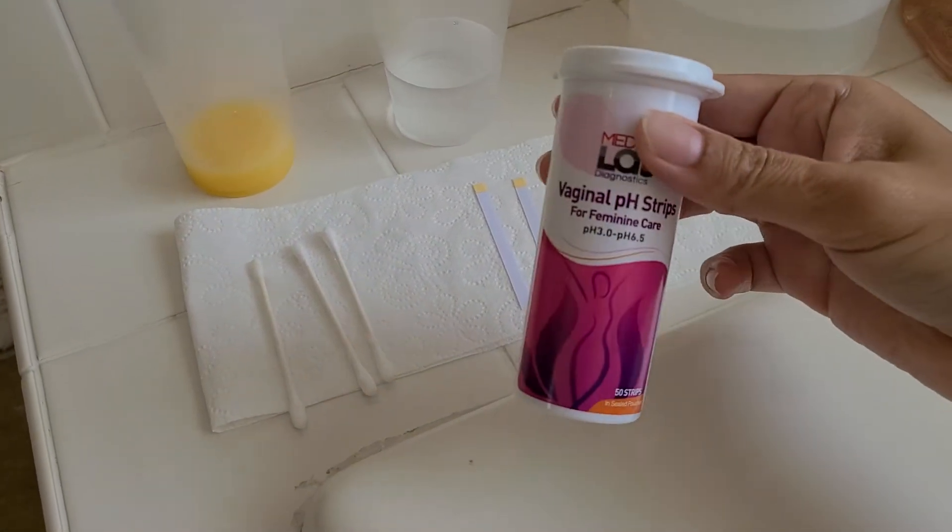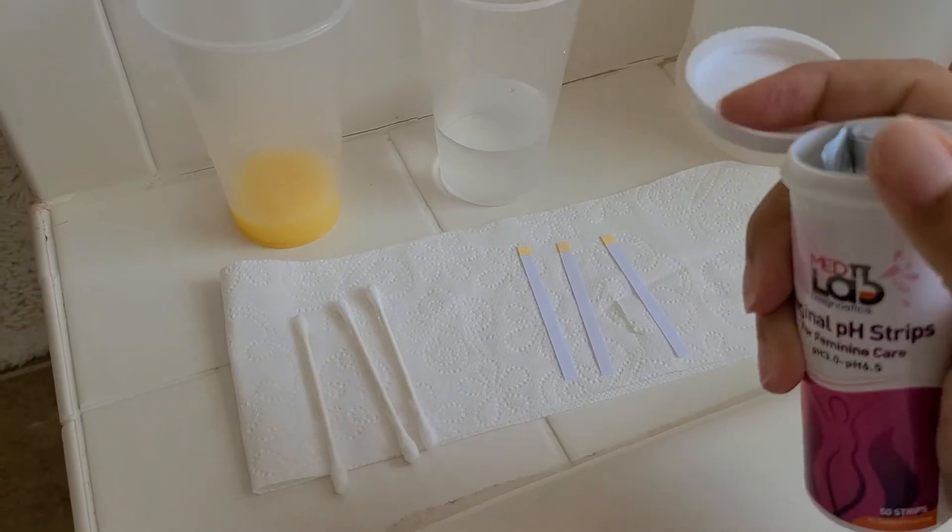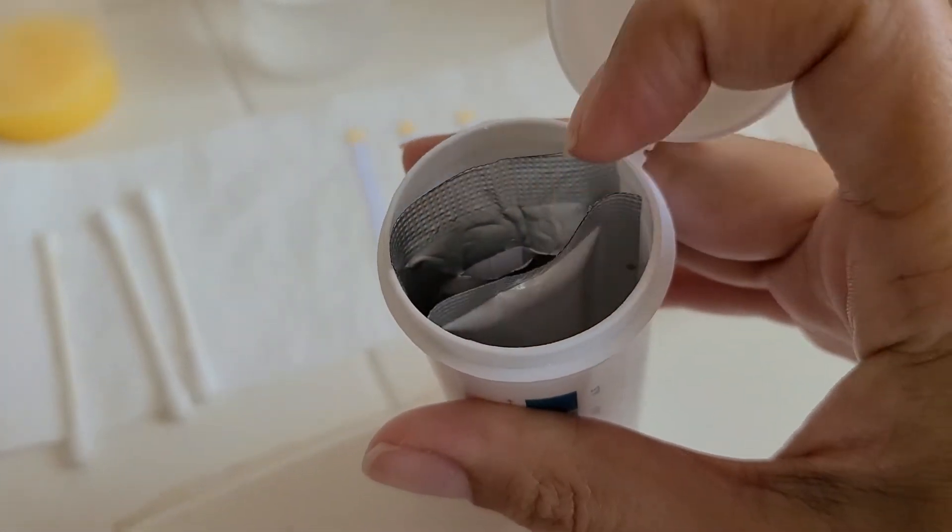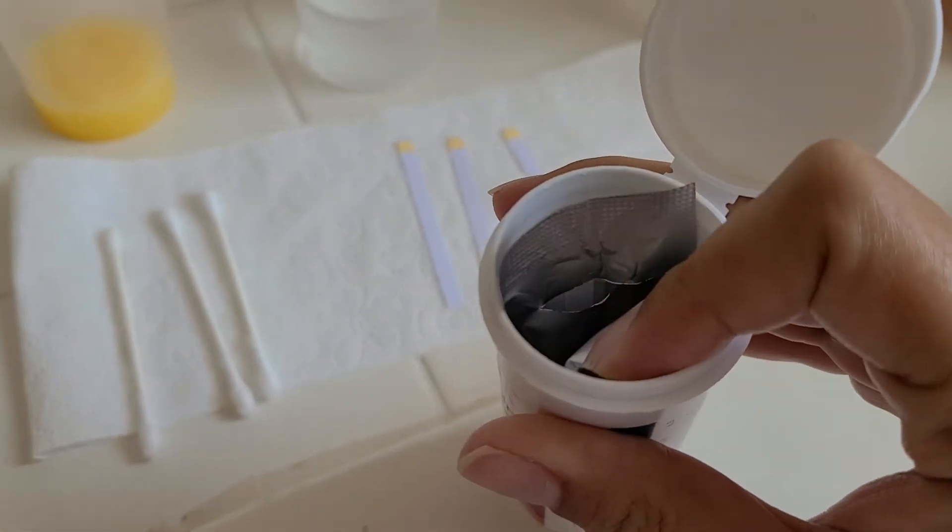This is what the strips look like when they come in the bottle. You just snap off the top and inside you're going to see that they come sealed. There are two separate packages that are sealed to maintain freshness for a longer period of time.